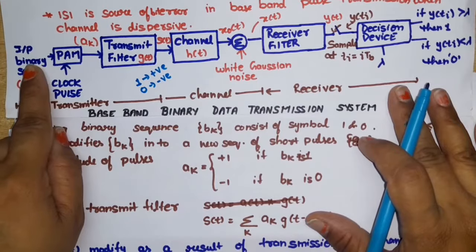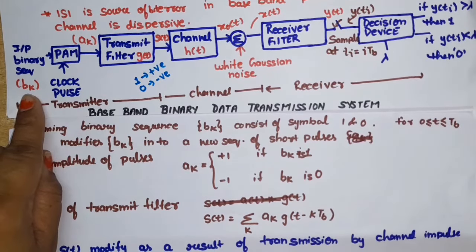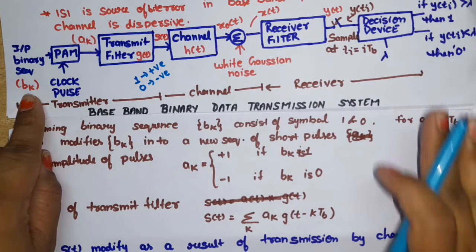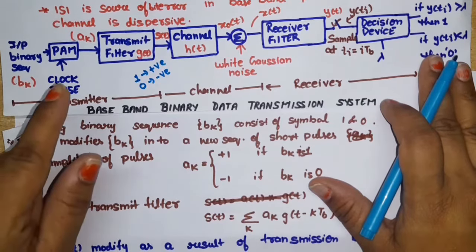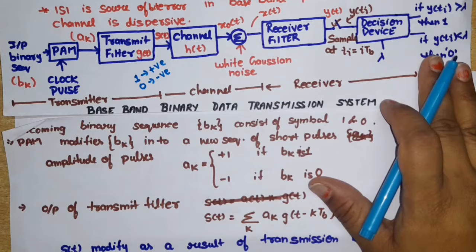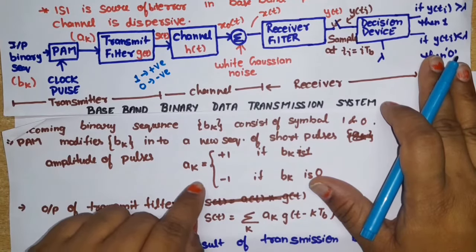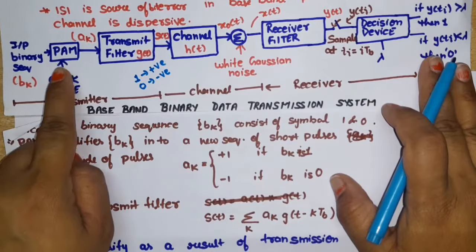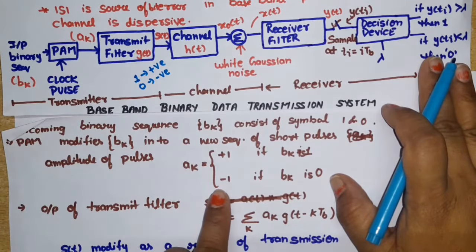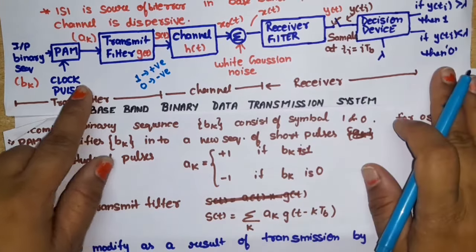First, we apply an input binary sequence bk — which represents the group of ones and zeros we want to transmit (like 1, 0, 1, 1) — to the pulse amplitude modulator, which works as a line encoder. It converts the binary sequence into short pulses. The amplitude ak of each short pulse is defined as: if bit bk is one, then ak = +1; if bit bk is zero, then ak = −1.